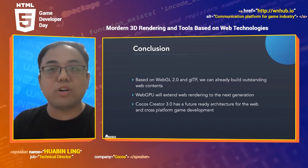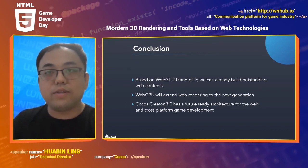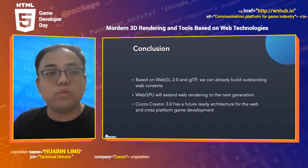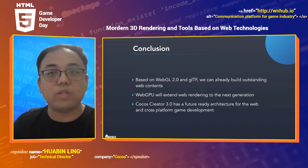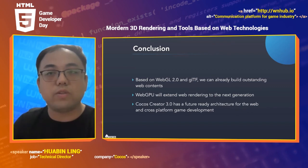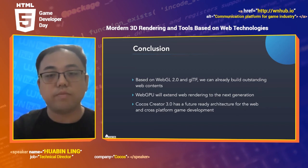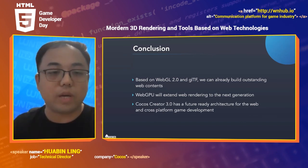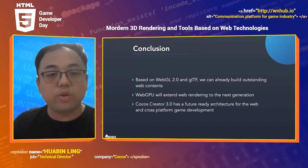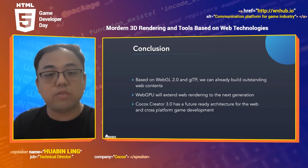So here comes the conclusion of my talk today. There are still a lot of details I can't fit in, and I've only revealed a small part about the powerful web rendering techniques and the bright future. But I hope these messages come through: based on WebGL 2 and glTF, we can really build amazing web content. WebGPU will extend web rendering to the next generation. Cocos Creator 3.0 has a future-ready architecture for web and cross-platform game development.